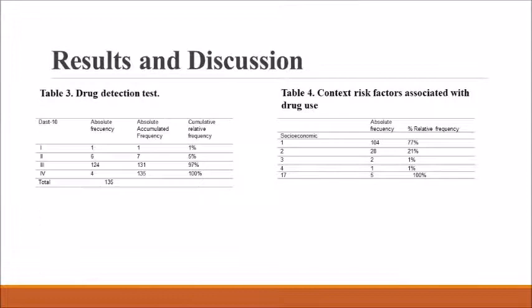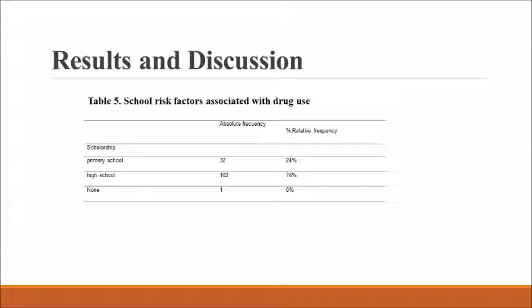97% of adolescents who entered are at risk level 3, which means a high risk of consumption according to context. 77% of adolescents belong to socioeconomic stratum 1, 28% to socioeconomic stratum 2, and the remaining are strata 3 and 4. Table 5 relates to the type of schooling of adolescents, observing that 24% are in primary school and 76% in secondary schooling, showing a relationship between educational level and consumption, as noted by Cruz, Gomez, and Rincon.